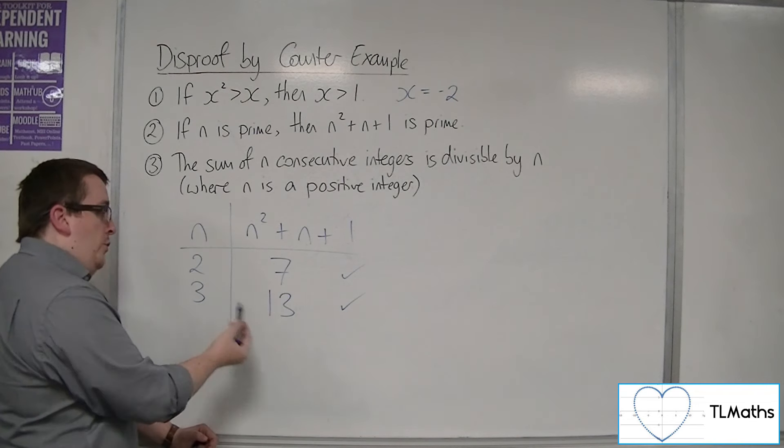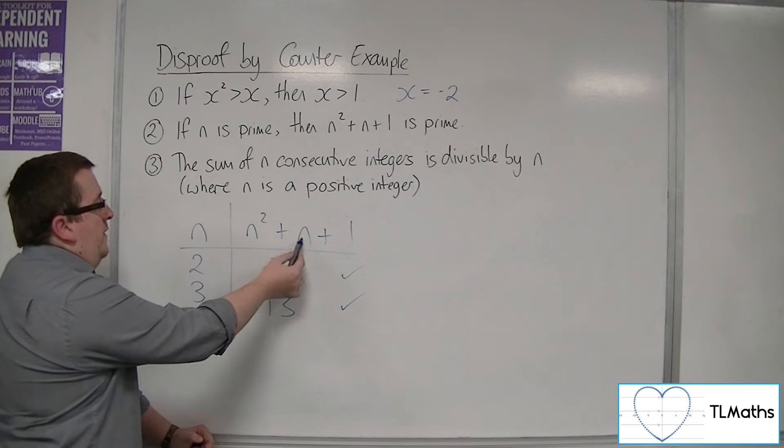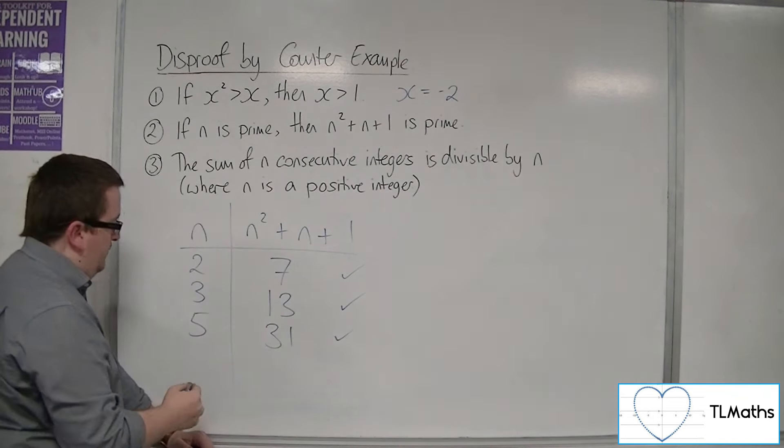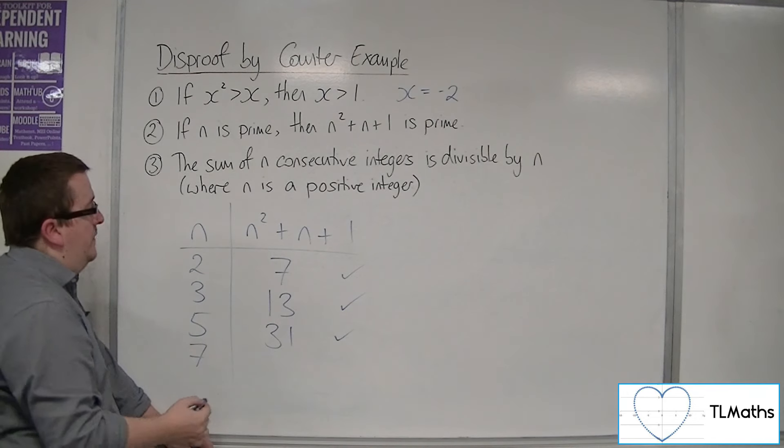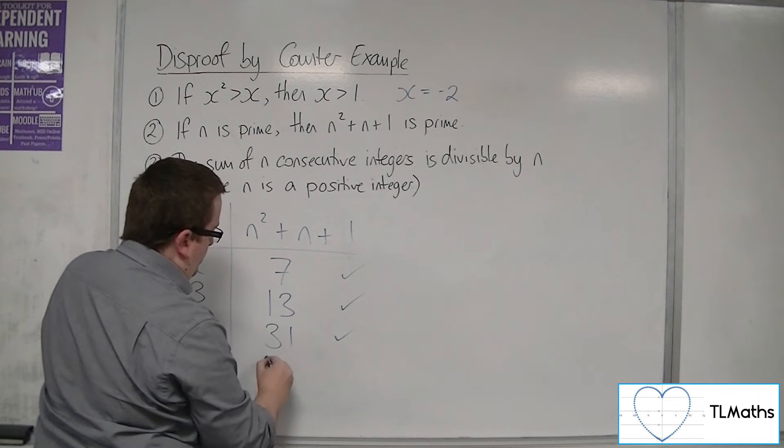We're not going to try 4 because 4's not prime. So we'll move on to 5. 25, 30, 31. 31's prime. So that works. Next prime is 7. So we have 49, 56, 57.